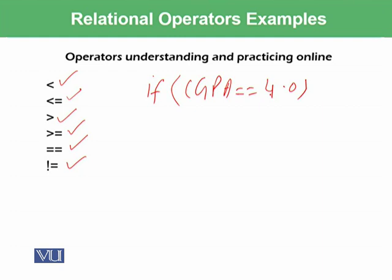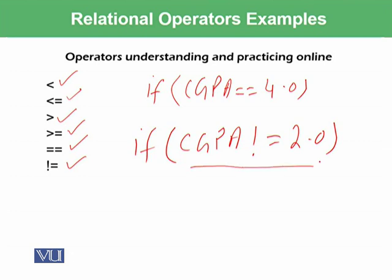The last one is the not equal to operator. For example, if you write CGPA is not equal to 2.0, this statement will be true only when CGPA is not equal to 2.0. If the CGPA is 2.0, then 2.0 is not equal to 2.0 — the condition will be false. For all CGPAs not exactly equal to 2.0, this condition will be true.